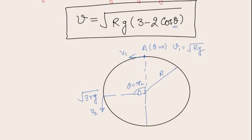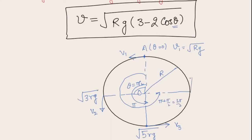At the lowest point θ = π, cosθ = −1, giving v3 = √(5rg). At θ = 3π/2, the velocity is again √(3rg). So the minimum velocities at key positions are: highest point √(rg), the two side points √(3rg), and the lowest point √(5rg).